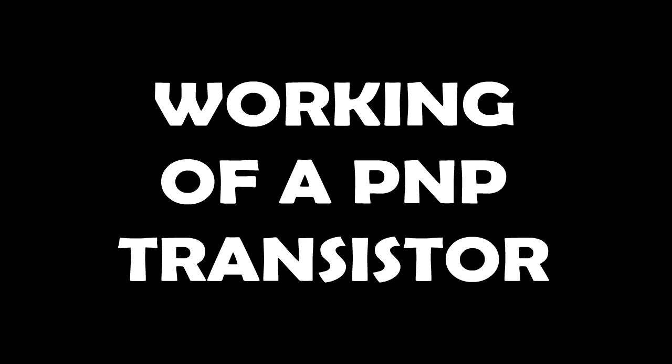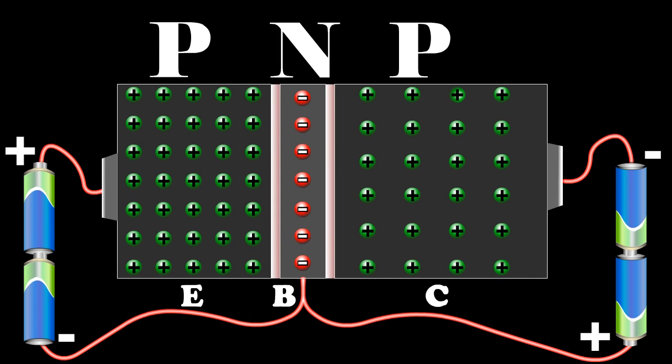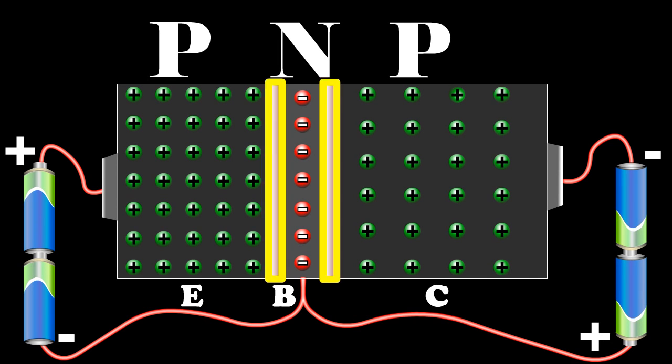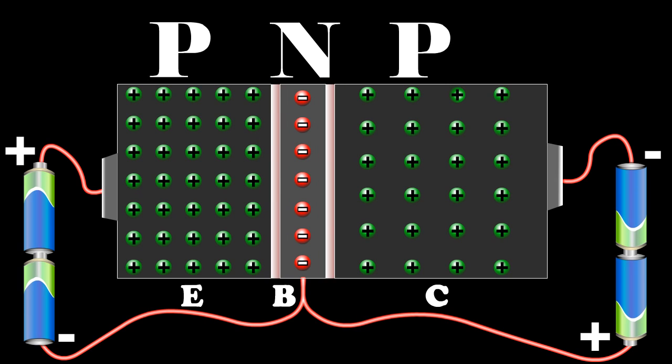Explain the working of a PNP transistor. Now let us see the construction. A PNP transistor is like two PN junction diodes which are placed back to back. At each junction there is a depletion region which gives rise to a potential barrier.